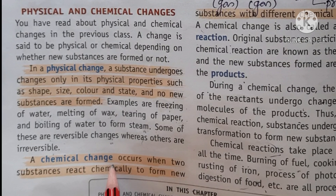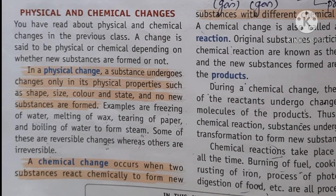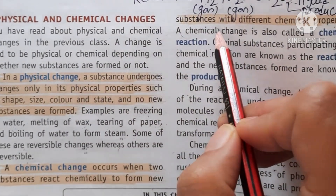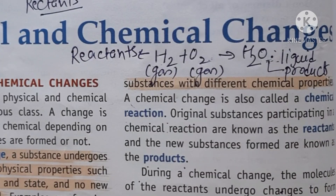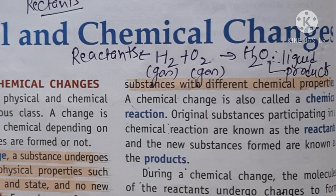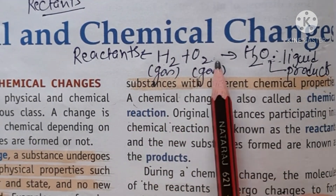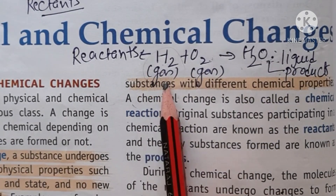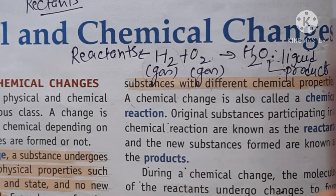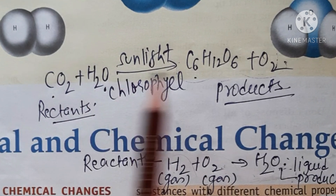The next topic is chemical changes. As the name suggests, there must be a chemical reaction between two substances, and there is always a formation of a new substance. Chemical changes occur when two substances react chemically to form a new substance with different chemical properties. When two elements combine in a fixed ratio they form a new substance whose properties are totally different from the constituent elements. For example, hydrogen and oxygen are both gases, but when they combine, water is formed in liquid form.